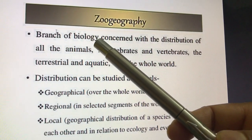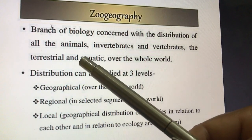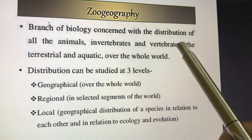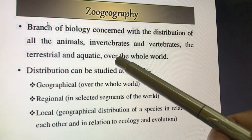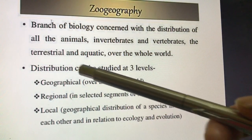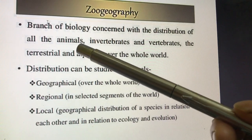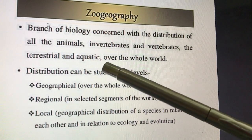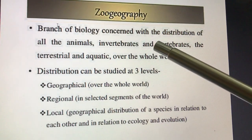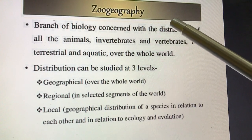So it's a branch of biology concerned with the distribution of all the animals — invertebrates and vertebrates, terrestrial and aquatic — over the whole world. तो Zoogeography को हम define करते हैं कि जितने भी प्रकार के जानवर हैं, चाहे वो invertebrates हैं, vertebrates हैं, terrestrial हैं, aquatic हैं, पूरे विश्व में जो उनका distribution pattern है, उसका अध्ययन हम Zoogeography के अंतर्गत करते हैं।